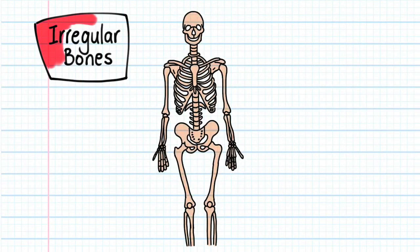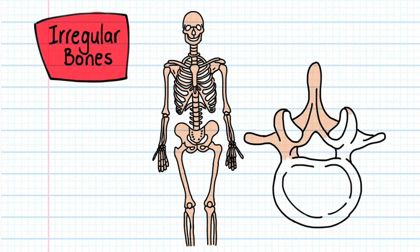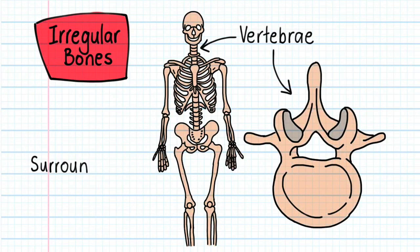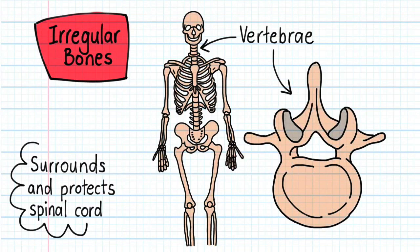Fourth are irregular bones. These bones have complex shapes and include our vertebrae or back bones. Vertebrae surround and protect the spinal cord and are attachment sites for back muscles and ligaments.